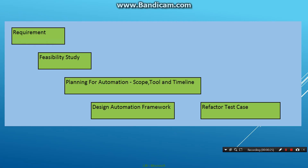This automation process, just like any other software activity, starts with somebody coming in with requirements. The person giving the requirements would normally be either a project manager or somebody from the manual testing team, and they'll have a requirement to automate some pieces of their functional test cases to make their life easier.